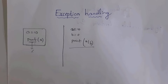A runtime error means the program does get converted from high-level language to low-level language, but whenever we run that code it displays an error — this is known as a runtime error. In the ZeroDivisionError example, the program gets converted from high-level to machine-understandable language, but due to wrong logic it can't run that code, so we call it a runtime error.